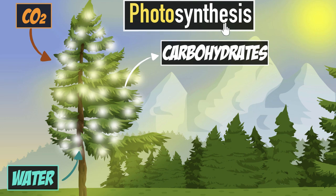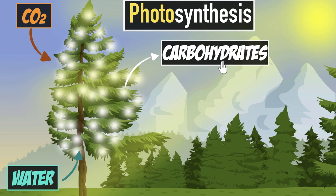Why is it called photosynthesis? Because plants use 'photo,' which means light energy, to 'synthesize' — meaning to create carbohydrates from raw materials. And why do they do that? Because carbohydrates are food for them. But carbohydrates are food for us as well — even we need these carbs for our energy.